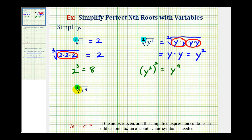And for the third example, notice how the index is four. So we're looking for what expression raised to the fourth power would be equal to x to the fourth. And again, if we can just think of that and know it's going to be x, we're done. But if not, we need to show work. So we'll go ahead and expand x to the fourth as four factors of x.